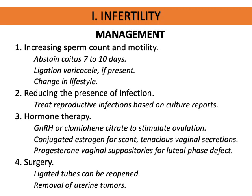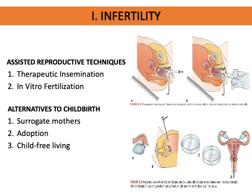Surgery may be done if there are ligated tubes that need to be reopened, or for removal of uterine tumors if present. In assisted reproductive techniques, one option is therapeutic insemination — there is no natural sexual intercourse; donor sperm is injected via the vagina. It could be sperm from the male partner or another male donor, followed by natural fertilization.